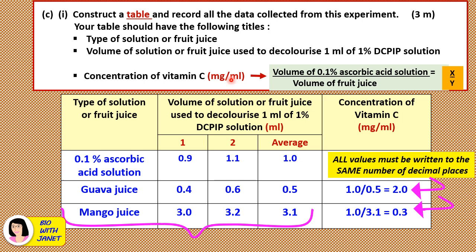Let's see how the table is marked. First, you should have all the titles from left to right with units — one mark. Type of solution or fruit juice; volume of solution or fruit juice used to decolorize 1 ml of 1% DCPIP solution — write 'solution' in full. This column is divided into three sub-columns: first reading, second reading, and average. Finally, concentration of vitamin C in mg/ml — units must be there. Titles plus units complete gives one tick.